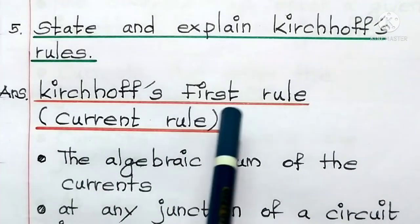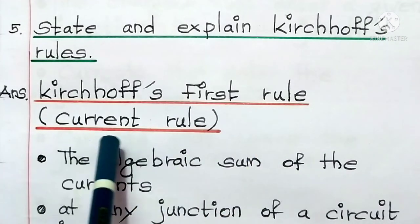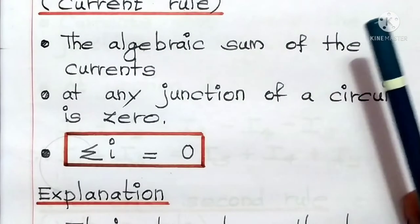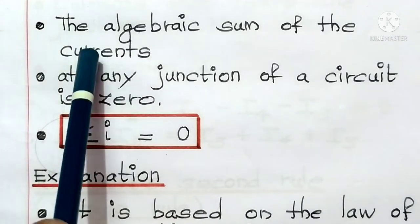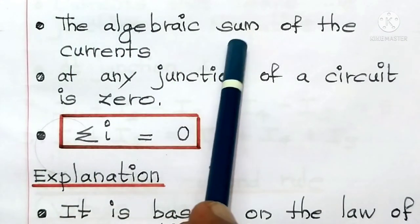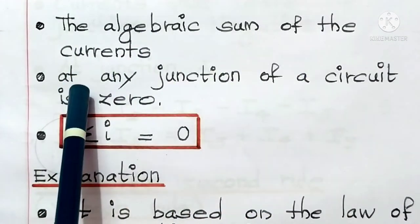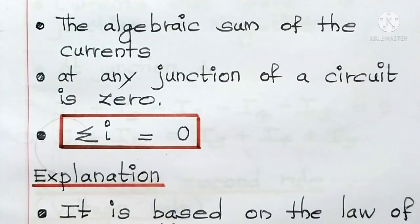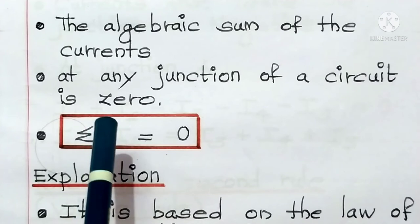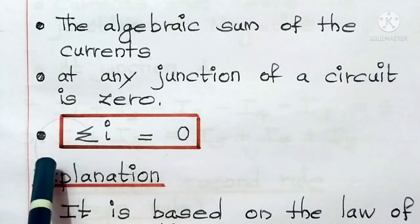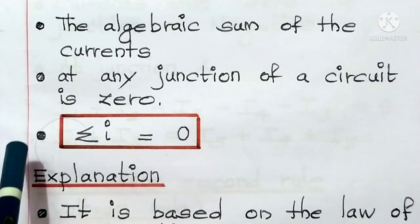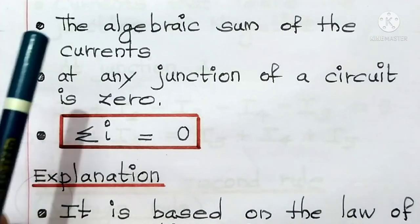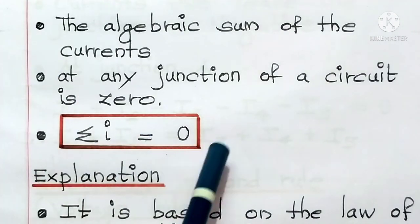Kirchhoff's first rule — in other words, it is also called as the current rule. The algebraic sum of the currents at any junction of a circuit is zero. The same law is given in the form of an equation: Sigma I is equal to 0.